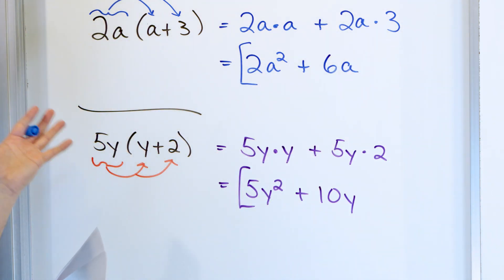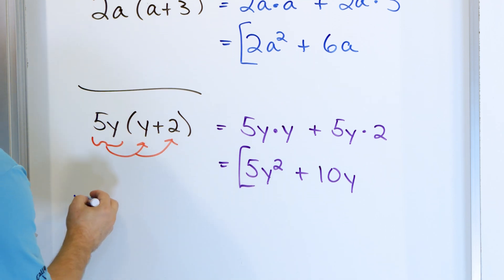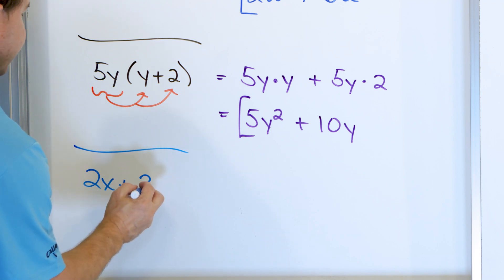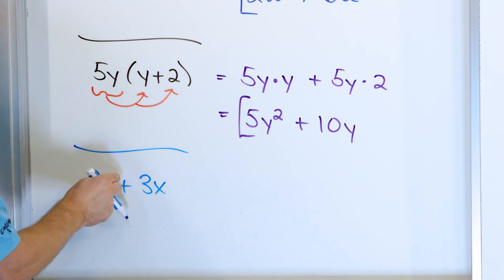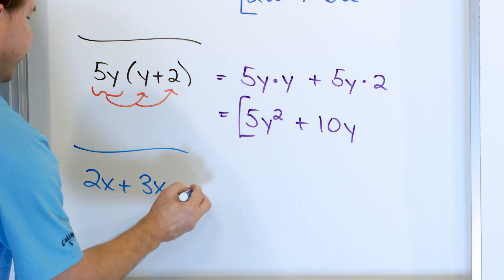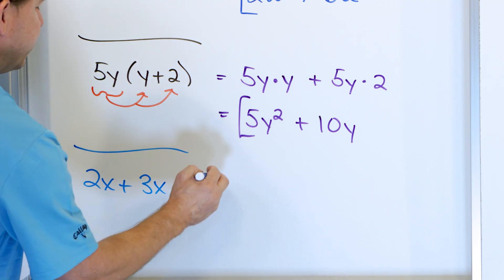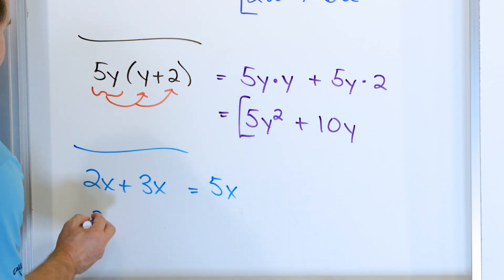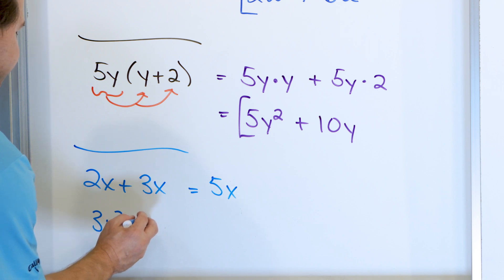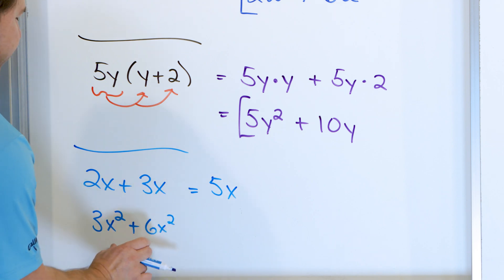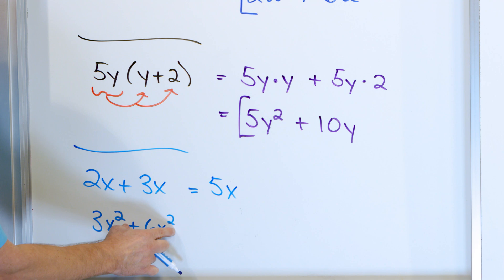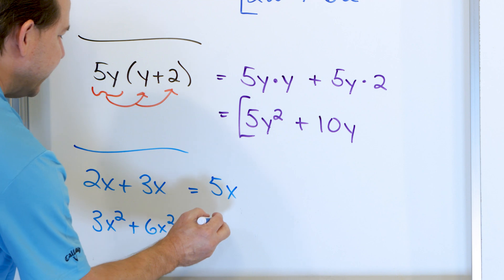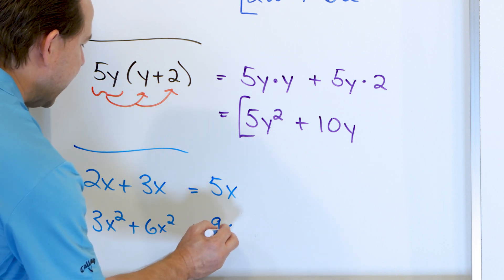The only time you can combine things is if the variables AND exponents match — like 2x plus 3x, where both exponents are 1, so it's like 2 fish plus 3 fish equals 5 fish. Or 3x squared plus 6x squared: same variable, same exponent, so 3 plus 6 gives 9x squared. When terms match, you can add them.